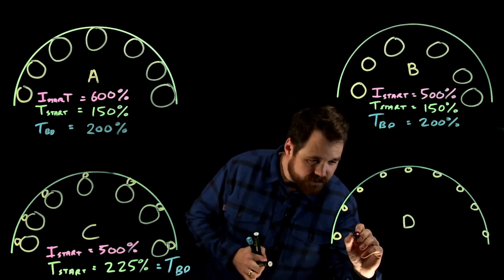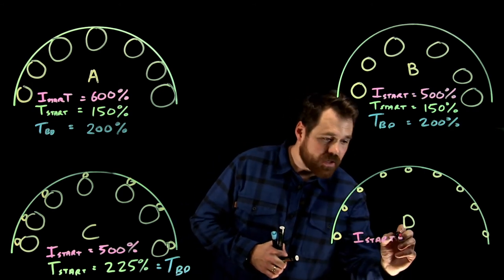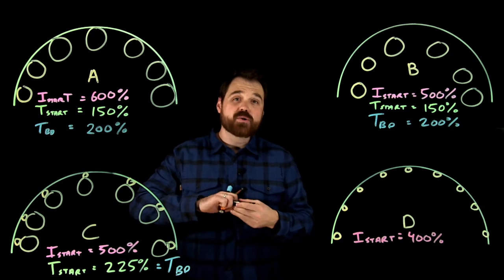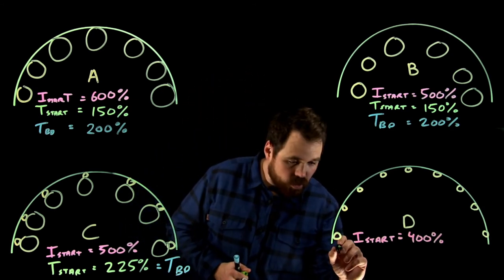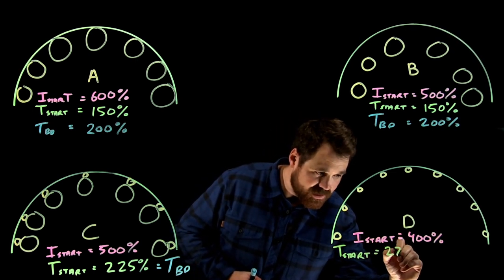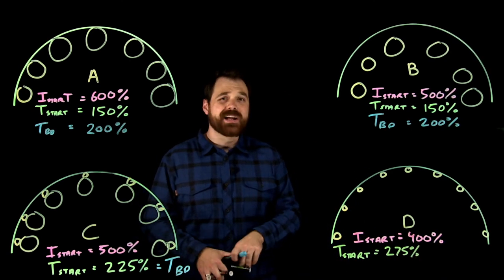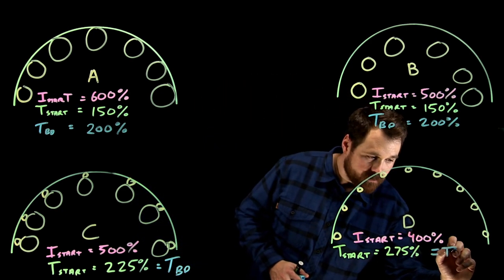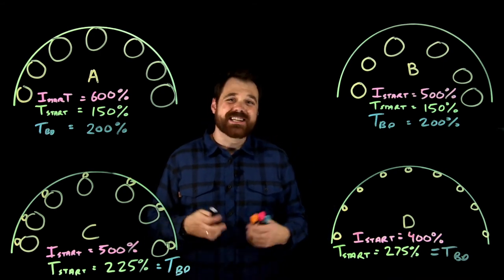So with this, what we see is our current at start is equal to about 400%. So we have a really low starting current, which makes it desirable. And we see a torque at start, and it's our highest one at 275%. So we get a really, really high starting torque. And at start is when we see that breakdown torque. So that's when we actually see the peak amount of torque produced is at start.